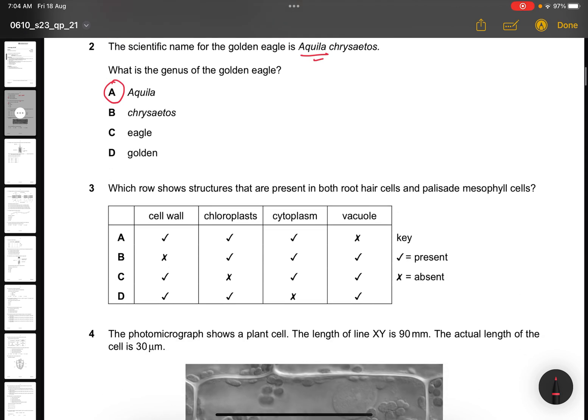Question 3. Which row shows structures that are present in both root hair cells and palisade mesophyll cells? There is a cell wall, but root hair cells have no chloroplasts. But they have cytoplasm and a vacuole. So the answer is C.